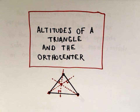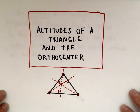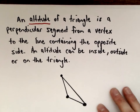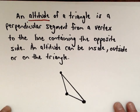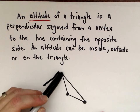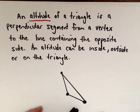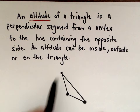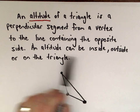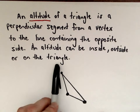In this video we're going to talk about altitudes of a triangle and the orthocenter. So first, let's talk about some definitions here, and then at the end we'll do a concrete example. An altitude of a triangle is a perpendicular segment from a vertex to the line containing the opposite side. Every triangle is going to have three altitudes, and an altitude can be inside, outside, or on the triangle.